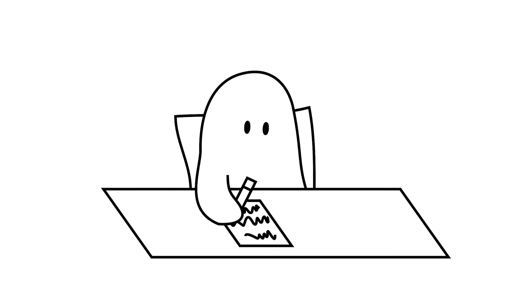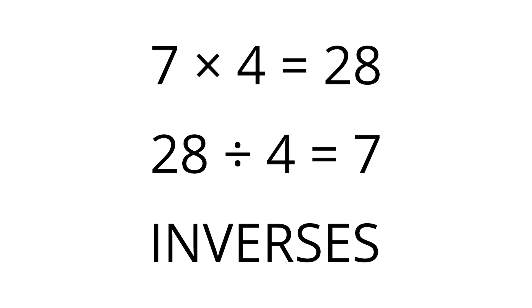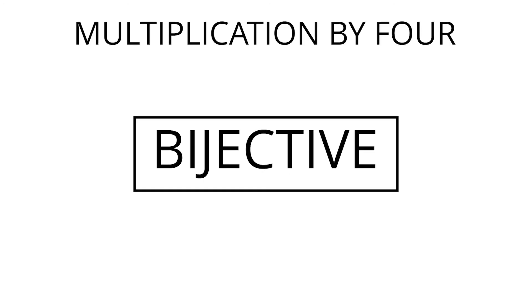Normally, a function like multiplication by 4 is undone by the function division by 4, and vice versa. So we say those two functions are inverses of each other. But this only works because multiplication by 4 is bijective.